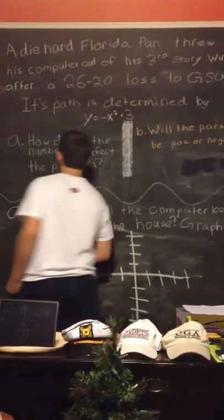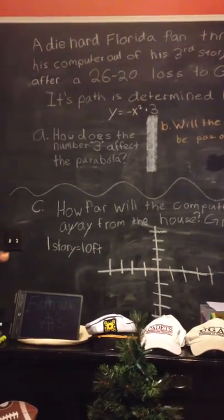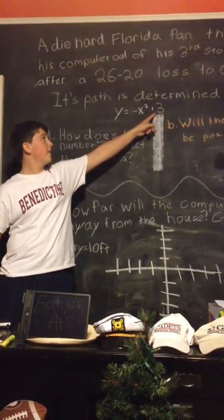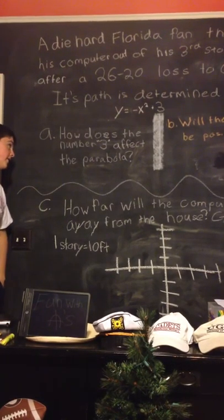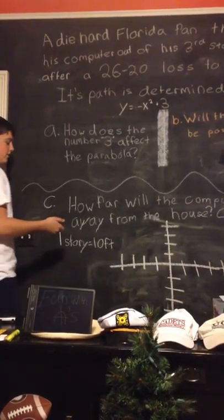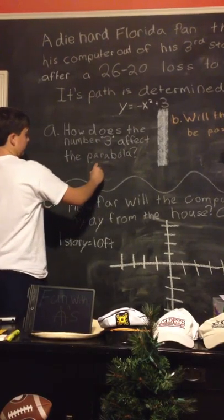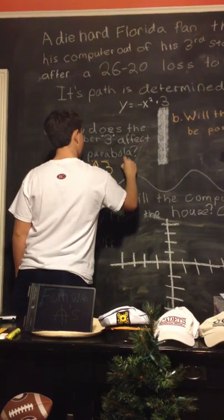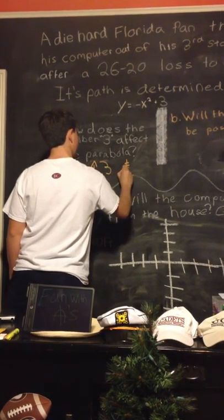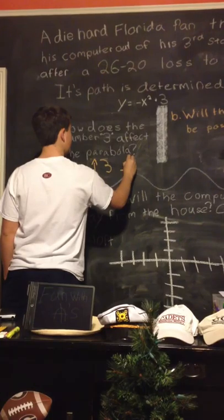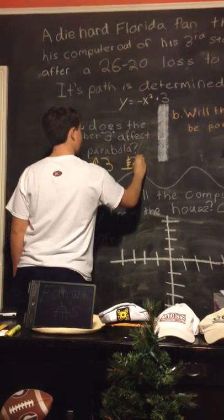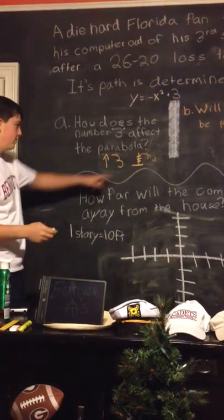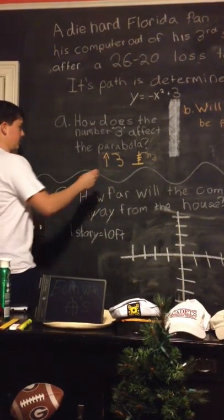The first question is: how does the number 3 affect the parabola? This being the plus 3 right here. It's going to move it up 3. Because it's positive 3. If it was negative 3, it'd move it down. So that's the answer for part a.